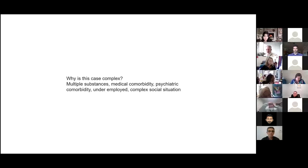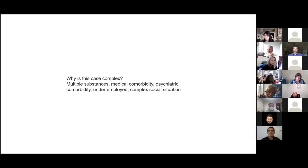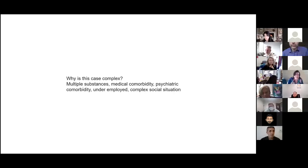Her complexity: multiple substances — alcohol and opiates — medical comorbidity, psychiatric comorbidity with PTSD, underemployment, and a complex social situation with family stigma. For her level of care, since she's a binge rather than daily drinker, intensive outpatient would be appropriate. Module approach: address pain and PTSD medically, add EMDR psychotherapy, connect her with a support community. Given her religious background, Celebrate Recovery could be a strong support, reconnecting her with a spiritual community after being shamed by her religious family.